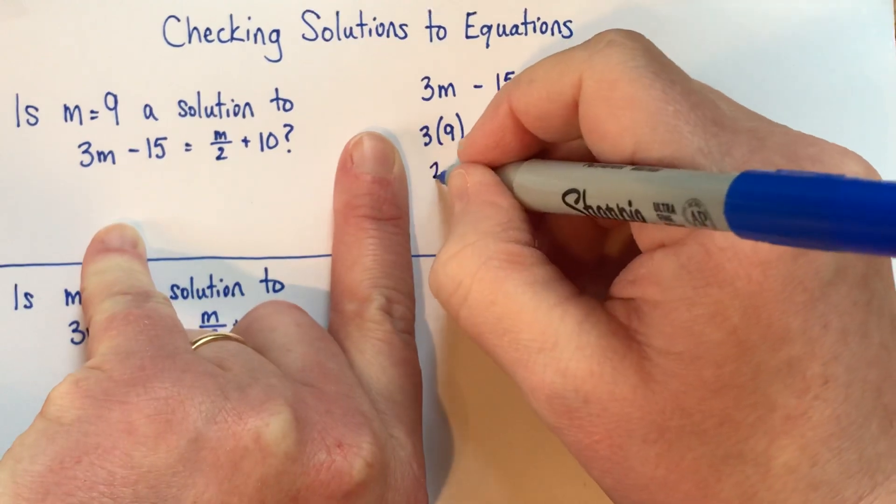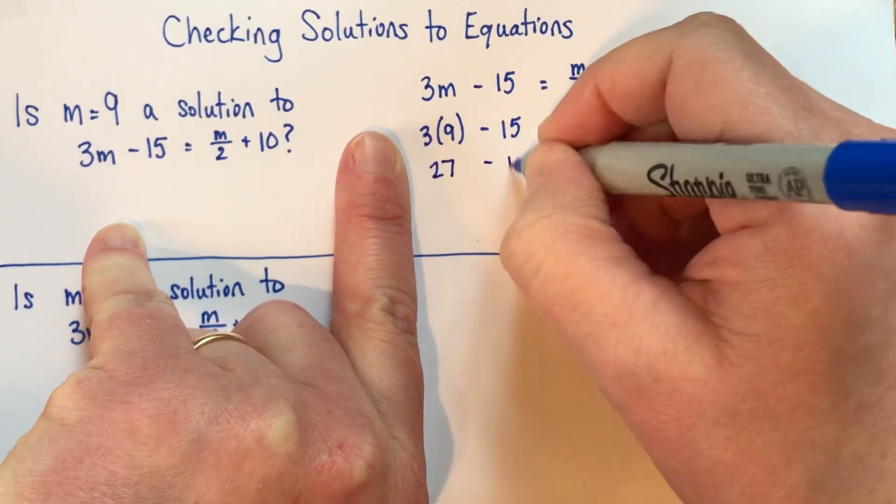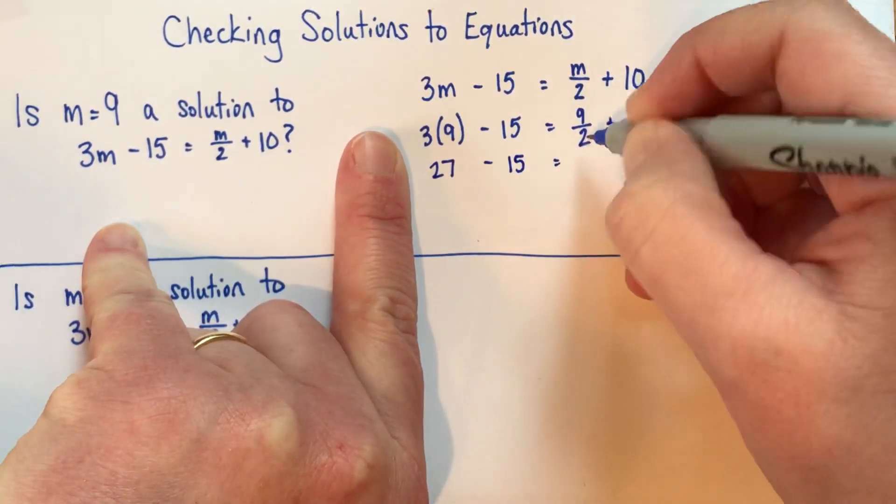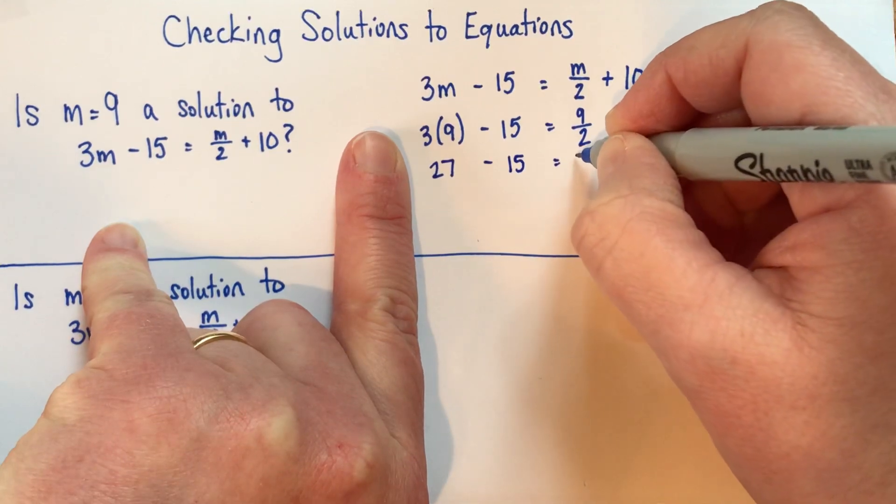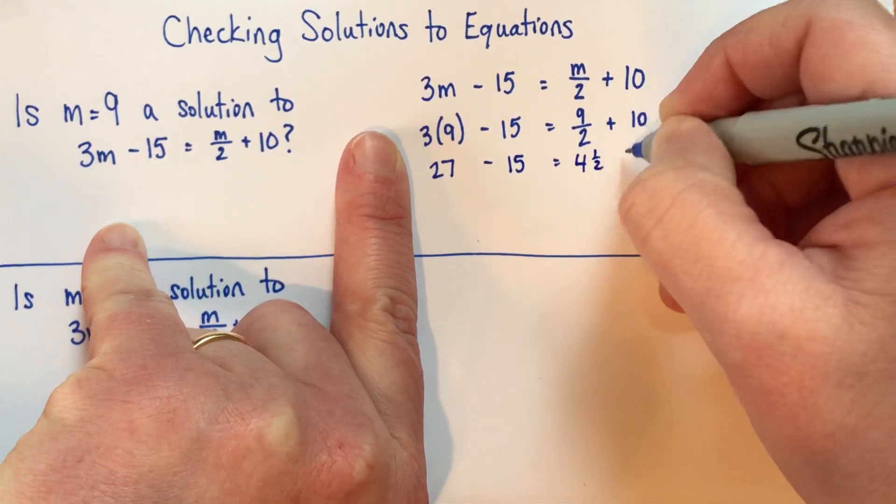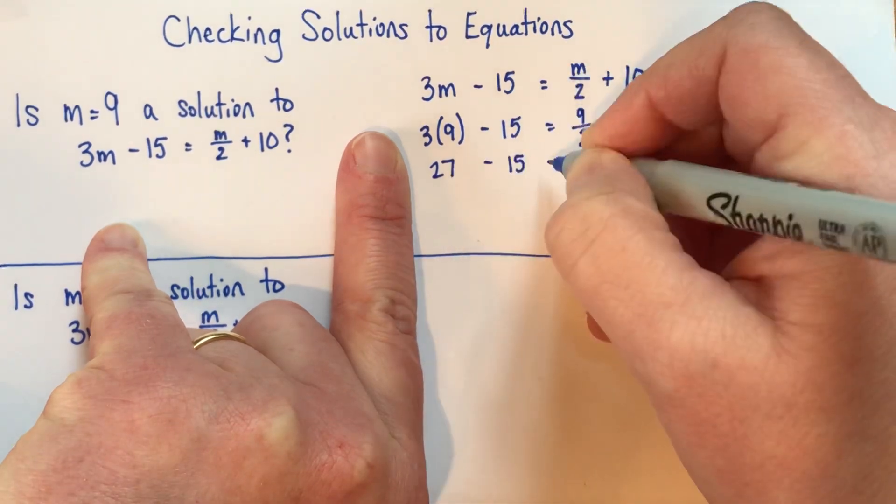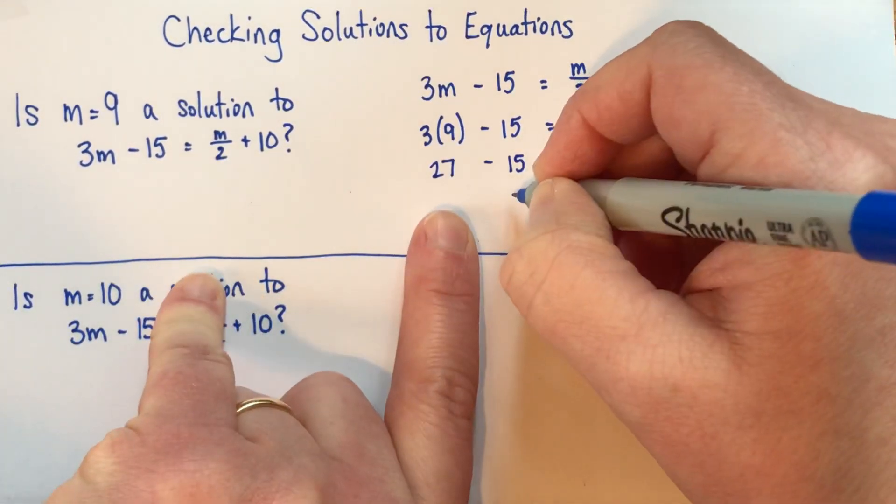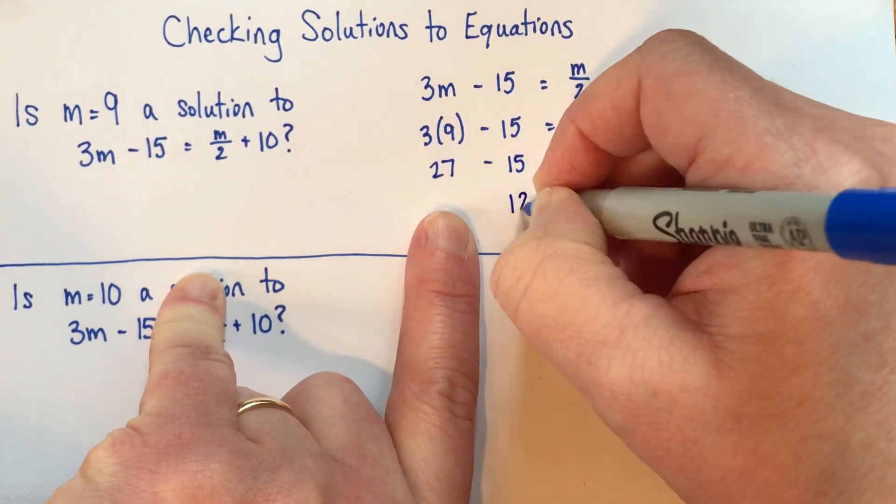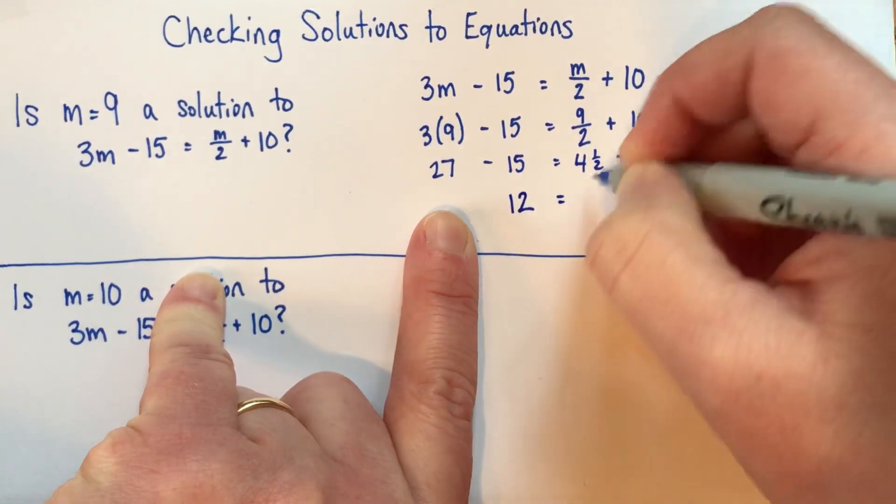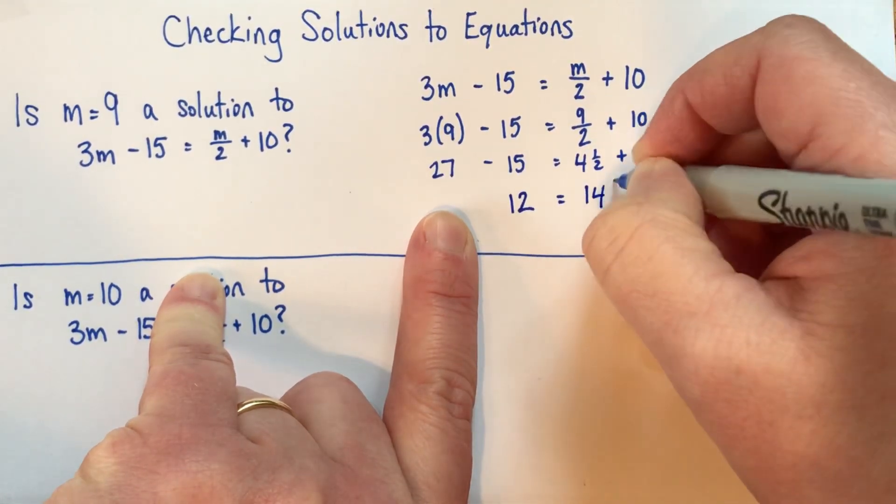We'll have 27, we can write 27 subtract 15. This is 4 and a half, plus 10. 27 minus 15 is 12. And this is 14 and a half.